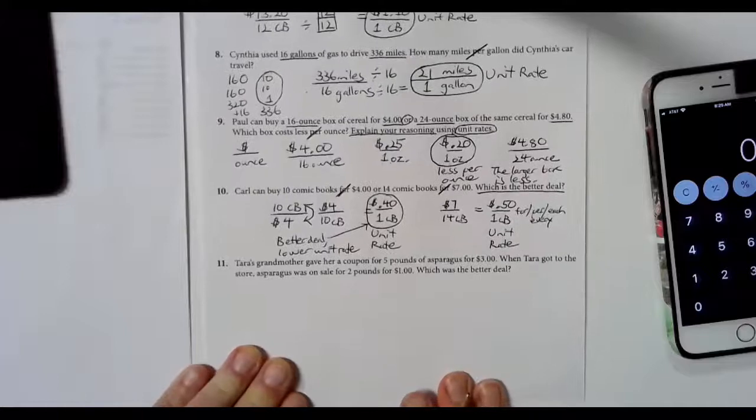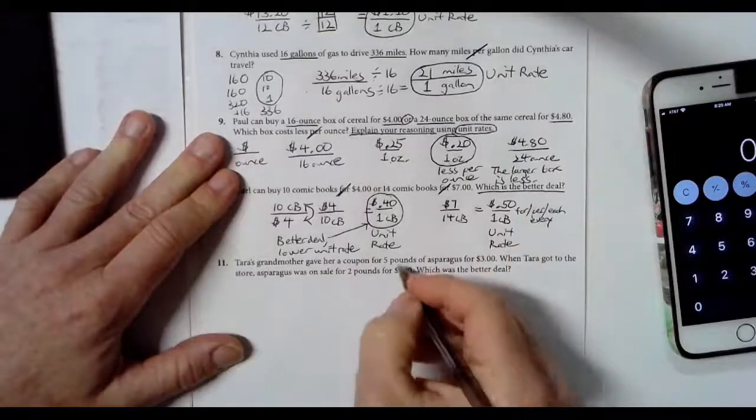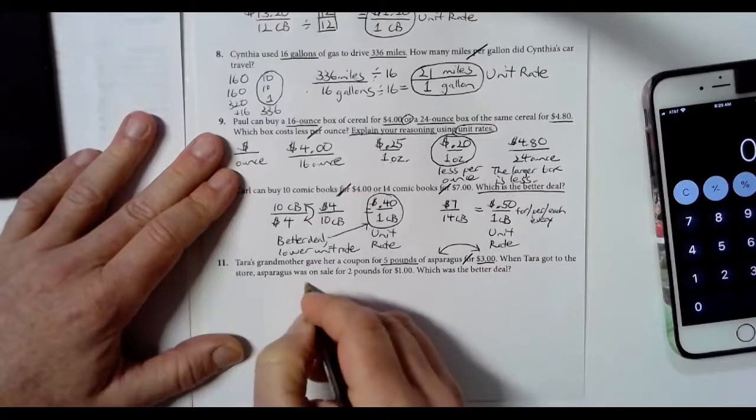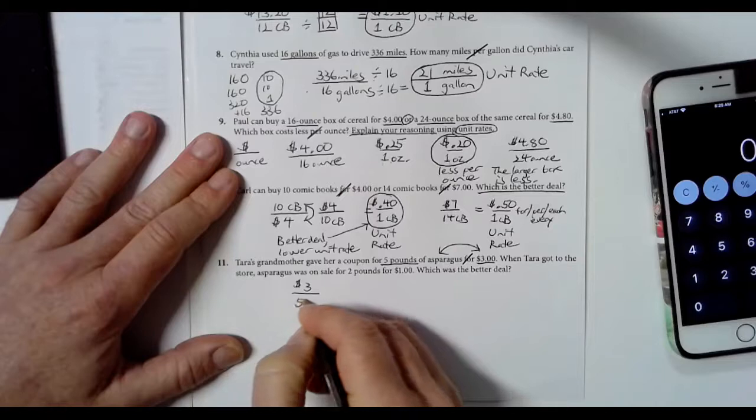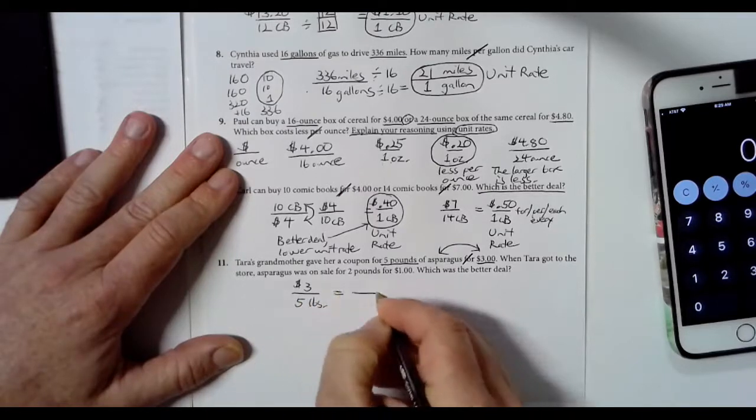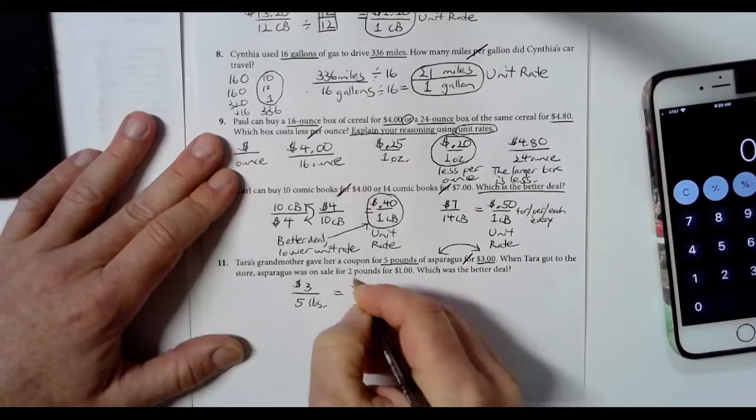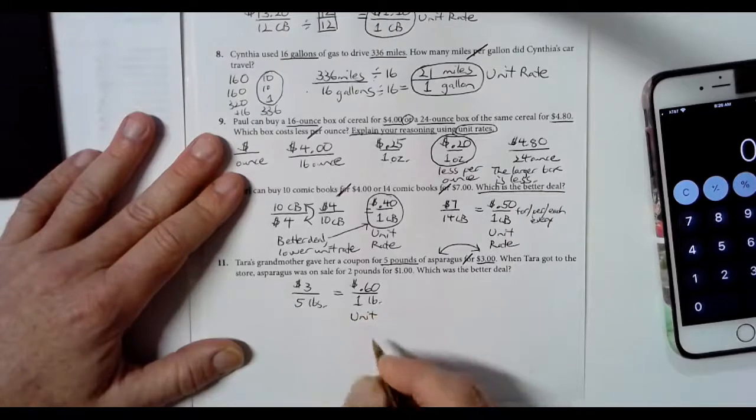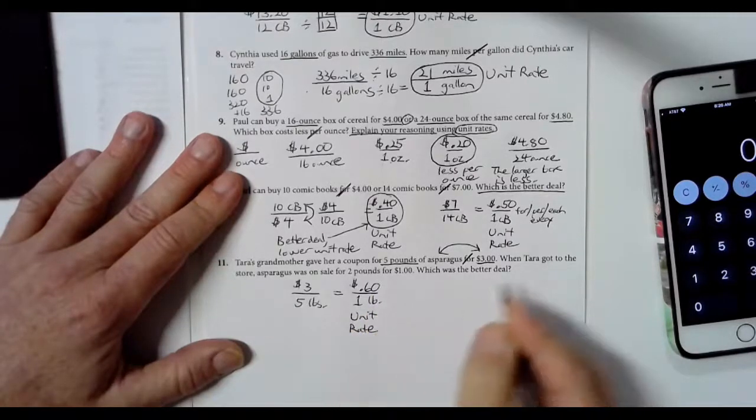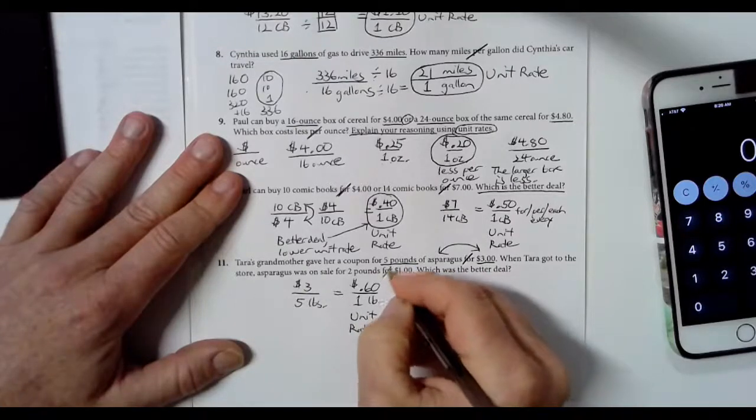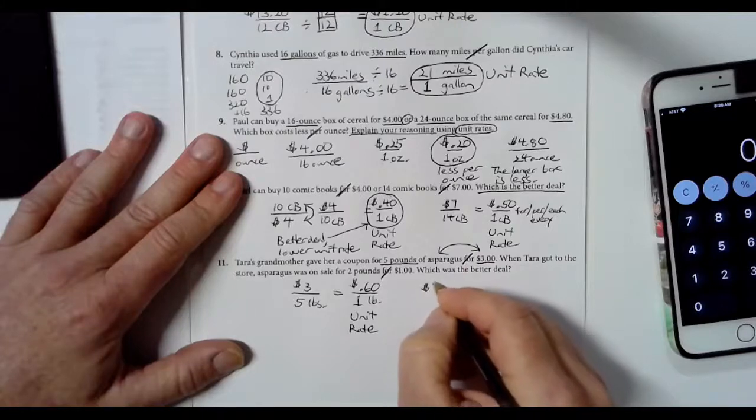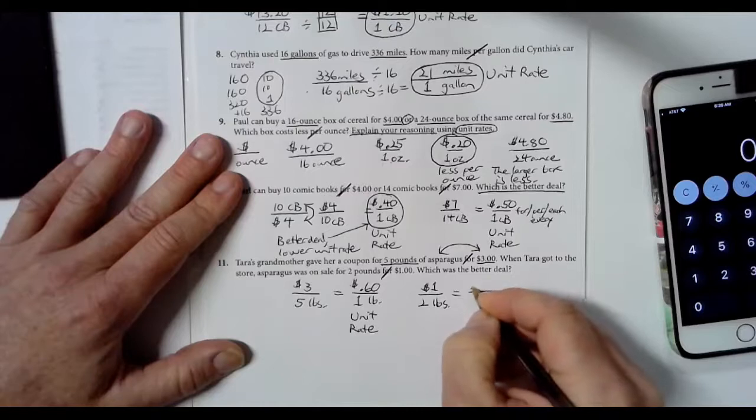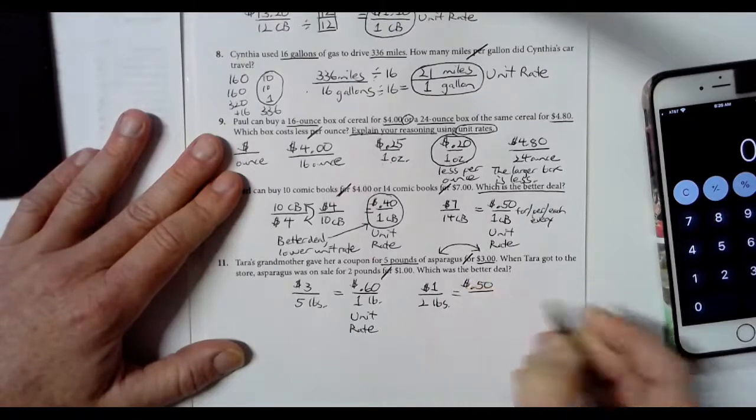It's not good enough just to have the right answer, you need to explain as if I've never seen this problem before. You need to explain somehow using the math, the numbers, which is the better deal and why. Finally, we're going to close out this video with Tara's grandmother. Five pounds for $3, we're going to switch those: dollars per pound. $3 for 5 pounds is going to give us a unit rate per pound, which in this case will be 60 cents.